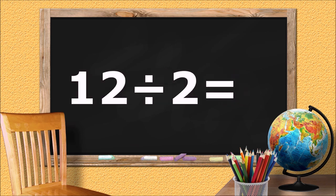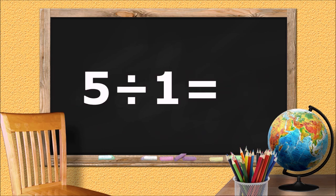Twelve divided by two equals... six. Five divided by one equals... five.